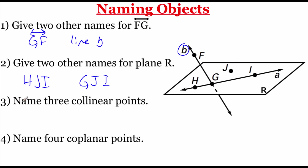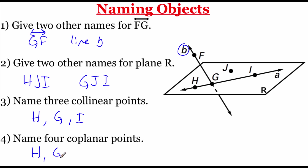Number three wants us to name three collinear points — these would be points H, G, and I, since those three points are all on the same line. Number four asks for four coplanar points. There are only four points on this plane: point H, point G, point J, and point I. Those four points are all on that same flat surface.